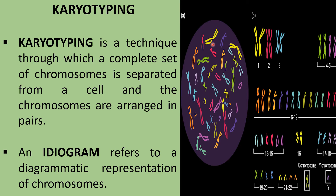Out of these, 23 chromosomes are derived from the father and 23 from the mother. The first paternal chromosome is paired with the first maternal chromosome, the second paternal with the second maternal, and likewise all 23 pairs of chromosomes are arranged in homologous pairs.